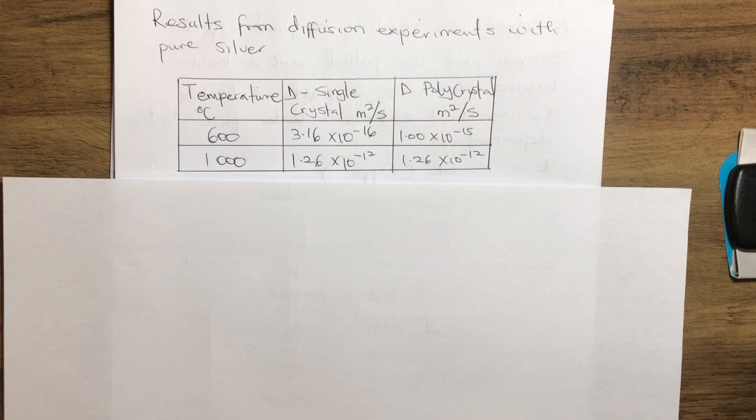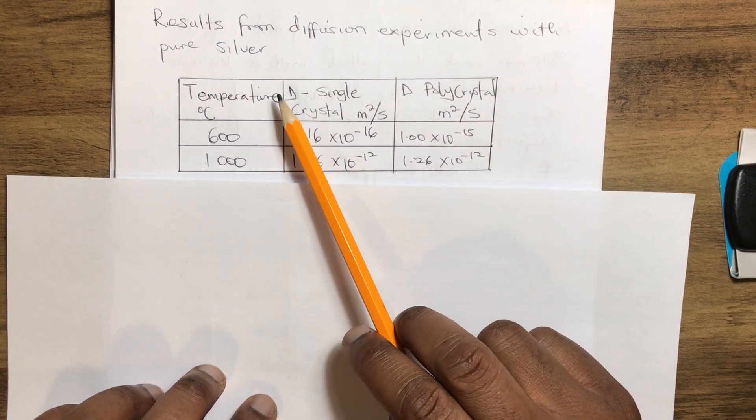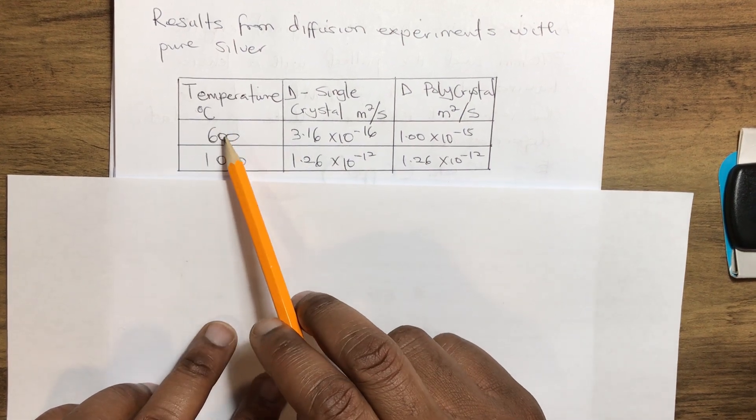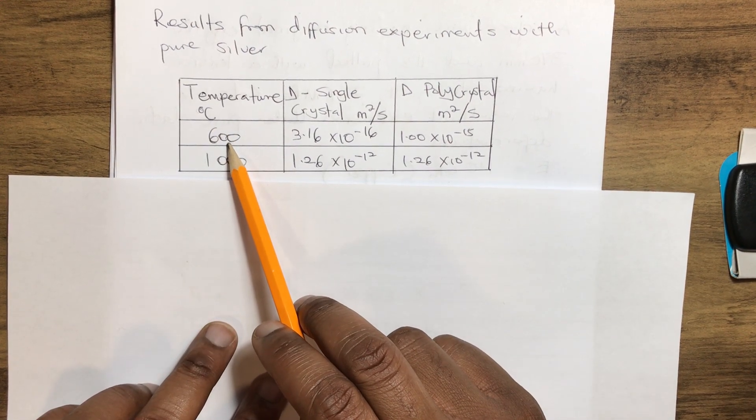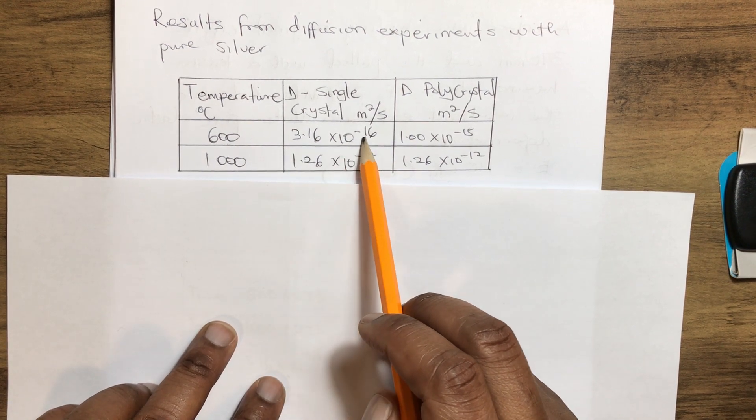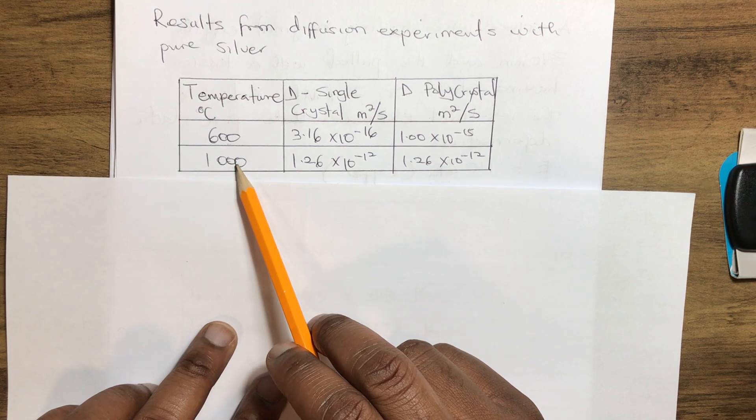Now, from the results of a diffusion experiment with pure silver given below: at temperature 600 degrees centigrade, we have 3.16 × 10^-16, and at 1000 degrees centigrade, it gives us 1.26 × 10^-12.